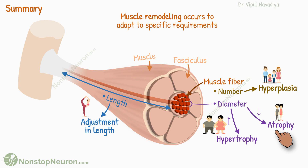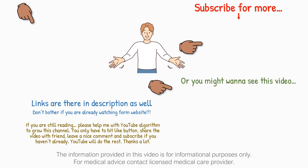Hyperplasia is the increase in the number of muscle fibers due to extreme force generation. Finally, adjustment of muscle length occurs depending on how much the muscle is being stretched on a regular basis. That's it for this video.